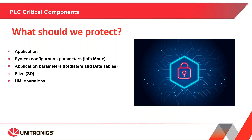For PLCs, what should we protect? First, we must protect the application, because it's the easiest way to cause damage — someone can download an empty application and the entire machine becomes useless. We also need to protect system configuration parameters like IP addresses, com ports, and communication protocols. For Vision and Samba, that's what we call info mode. Additionally, application parameters such as set points, limits, and maximum temperature values, as well as data tables, SD files, and HMI user operations directly from the screen.